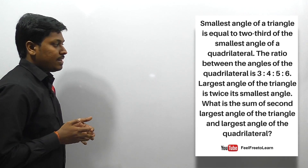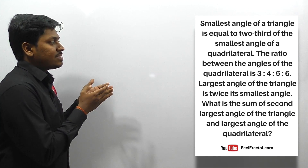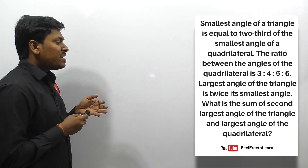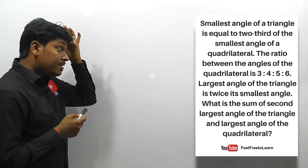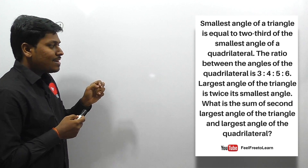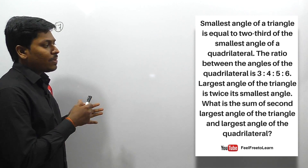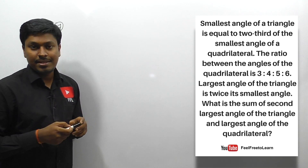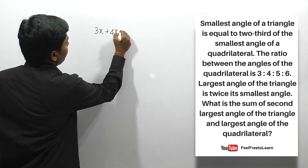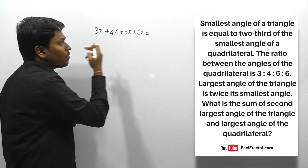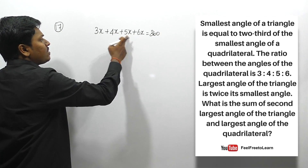Question 17: the smallest angle of a triangle equals two-thirds of the smallest angle of a quadrilateral. The ratio between the four angles of the quadrilateral is 3:4:5:6. The largest angle of the triangle is twice its smallest angle. What is the sum of the largest angle of the triangle and the largest angle of the quadrilateral? The sum of all four angles of a quadrilateral is 360 degrees, so 3x + 4x + 5x + 6x = 360.